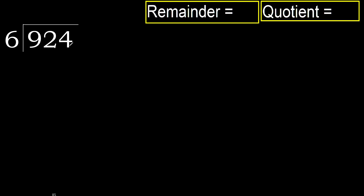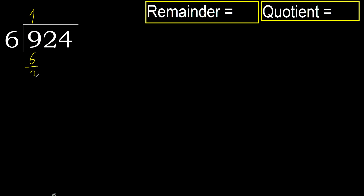924 divided by 6. 9 is not less, therefore with 9: 6 multiplied by which number is nearest to 9 but not greater? 6 multiplied by 2 is 12, which is greater. Multiply by 1 is 6, which is not greater. Subtract 9 minus 6 equals 3.